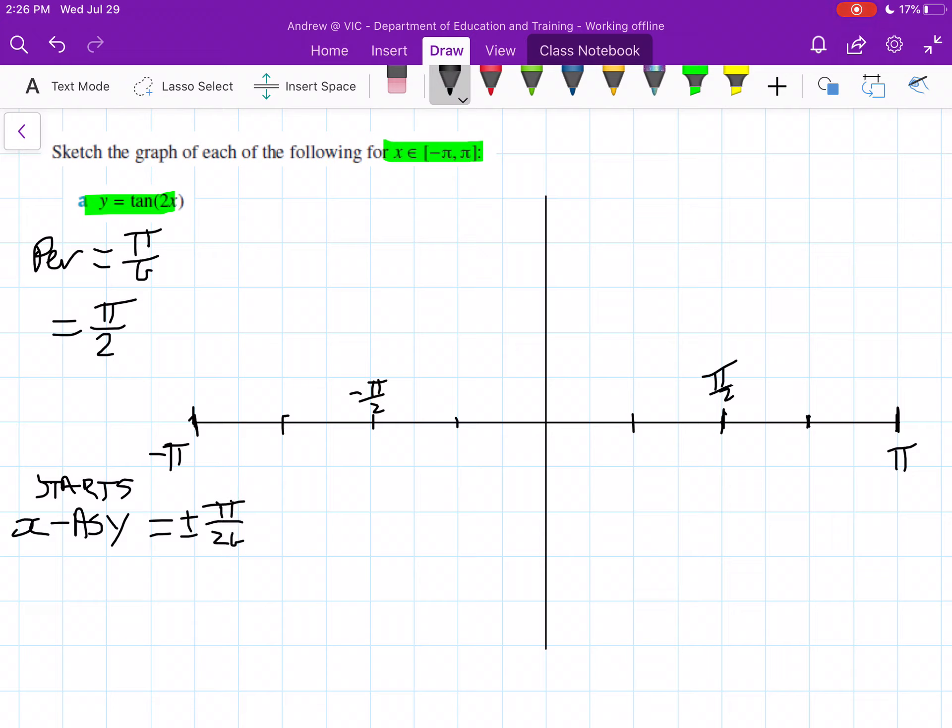this is equal to plus or minus π over 2b. So this here is equal to plus or minus π over 2b, so our b value is 2 here because it's 2 times x, so π over 4. So there are our starting asymptotes and then after it, it's every period.